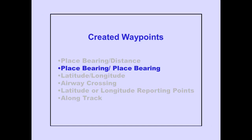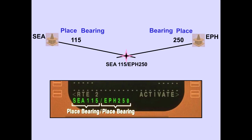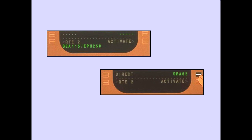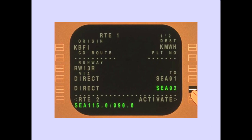Let's define a waypoint by place-bearing place-bearing. The intersection of two bearings or radials also defines a waypoint. In this example, the intersection of the SEA 115 and the EPH 250 radials are being used to create a waypoint. Entering place-bearing place-bearing in the route abbreviates the scratchpad entry to a five-character identifier. Line selecting the waypoint identifier displays the place-bearing distance in tenths of a degree and miles from the first place-bearing that was typed into the scratchpad.